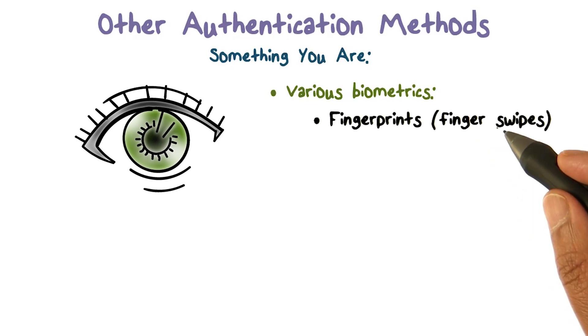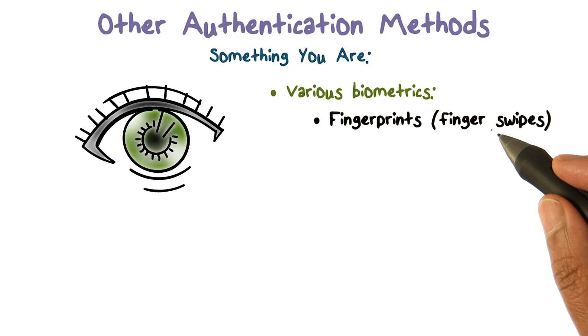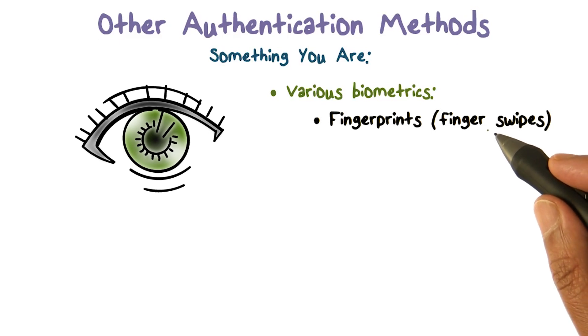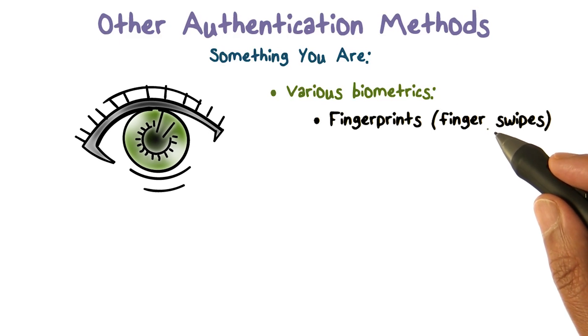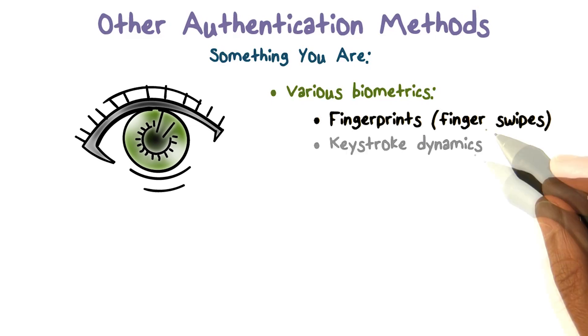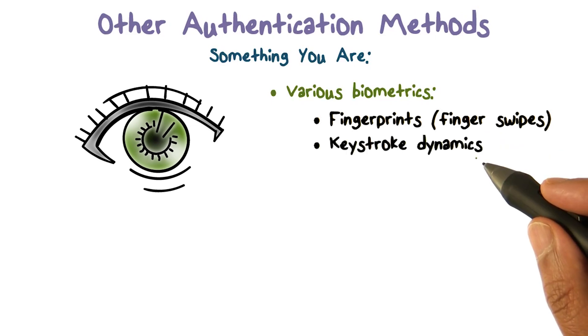Fingerprints are one — you swipe your finger, for example with Touch ID and things like that, and they look for the pattern in your fingerprints. And based on that, they say it's really you.